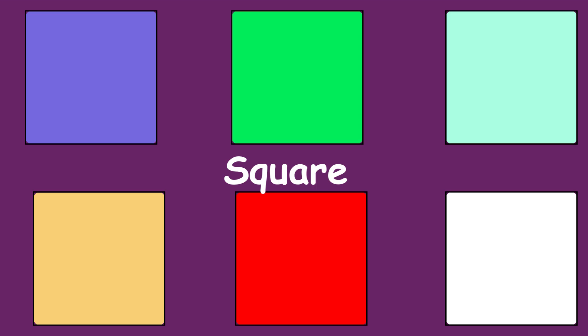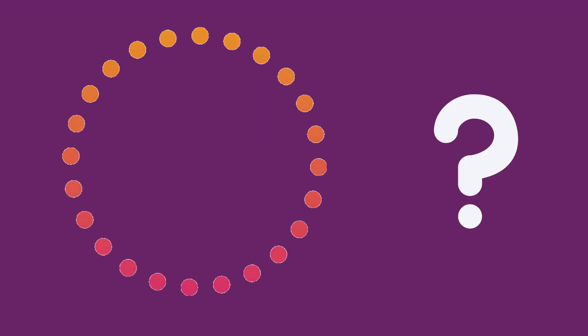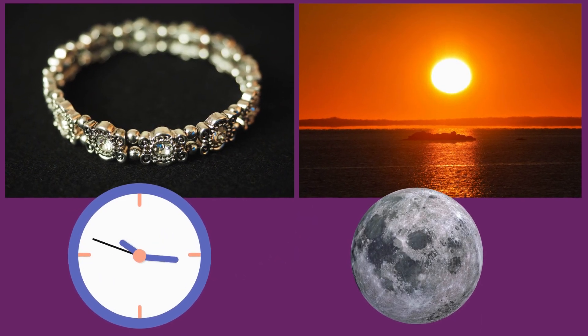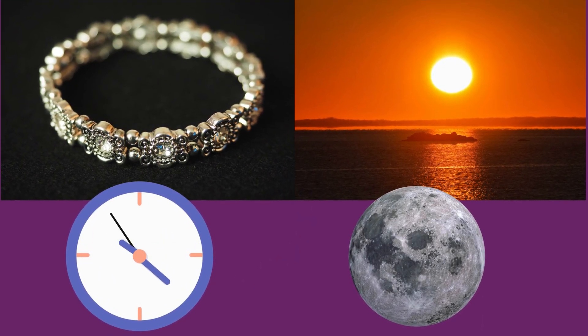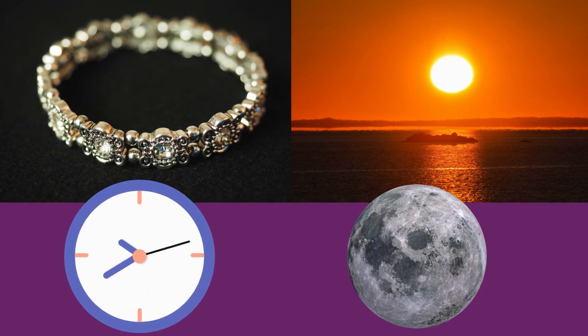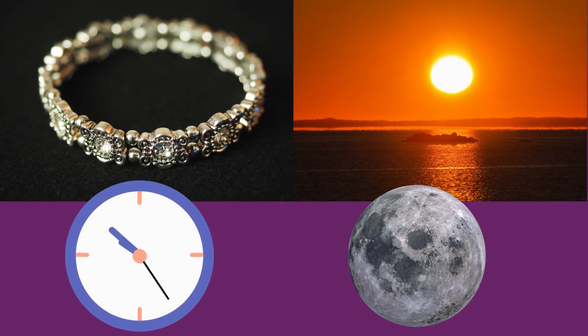What is it? Yes, this is a square! A square has all sides equal. Okay, let's check the next one. Which shape is this? Correct — this is a circle. Round objects are called circles.